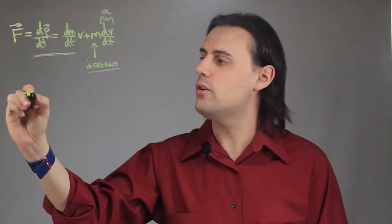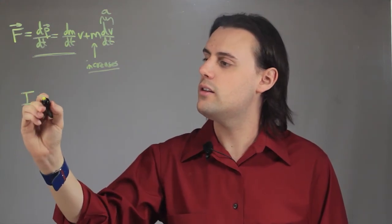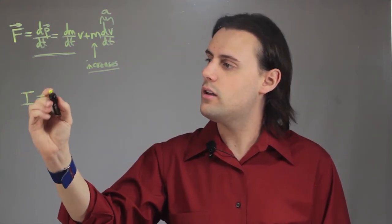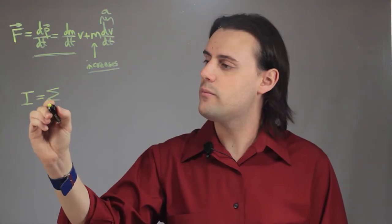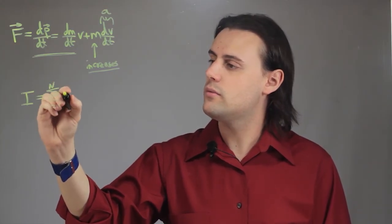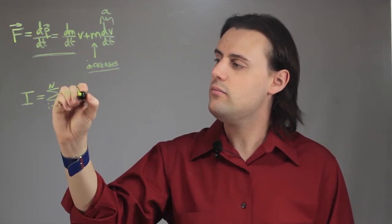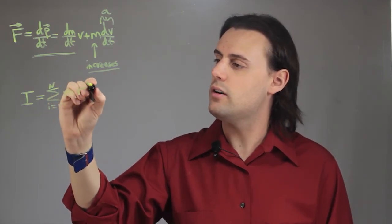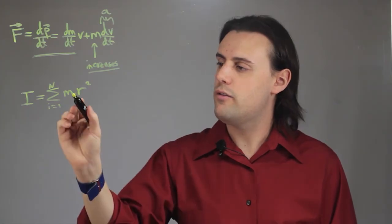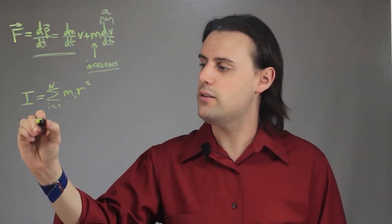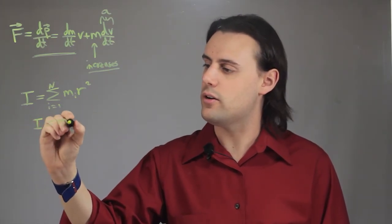We can also directly look at the equation for the moment of inertia, which is equal to the sum of the number of masses times distance r squared. If we just have one mass, then the moment of inertia simplifies to just mr squared.